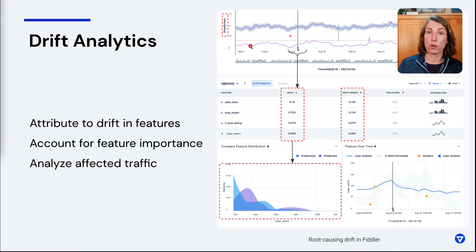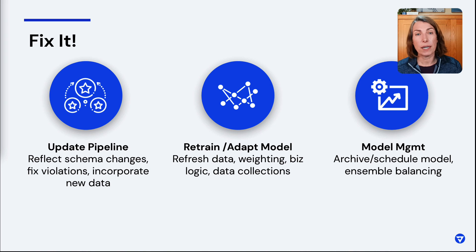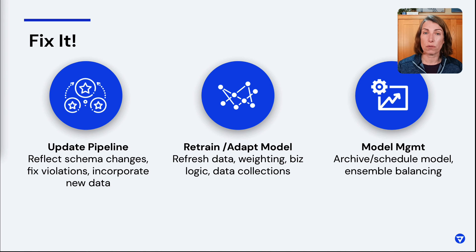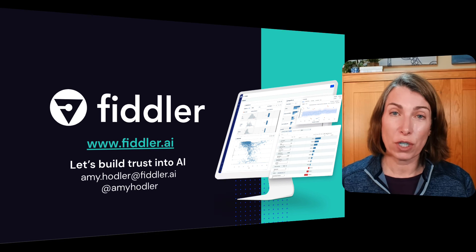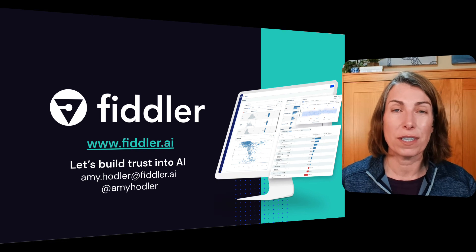Of course, you want to fix it once you've found an issue. This may be updating a pipeline, fixing a data violation, incorporating new data, retraining or adapting your model, refreshing the training data, weighting different features, or collecting different data. You might also need model management — since we talked about periodicity, you might schedule models to be valid during certain seasons or change the balancing of your ensemble model. With that quick overview of machine learning drift, if you want more information, check us out at Fiddler, or reach out if you want to dive deeper or are looking for more resources. Thank you, everybody — I appreciate your time.